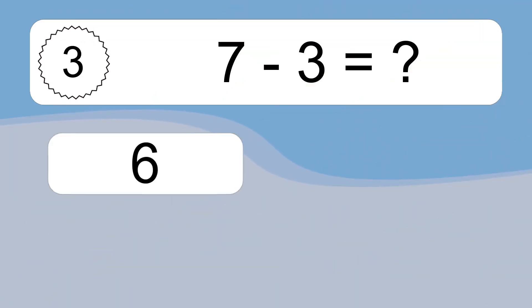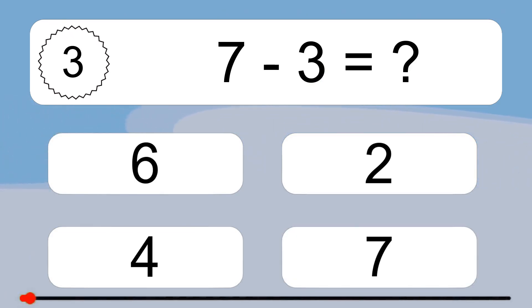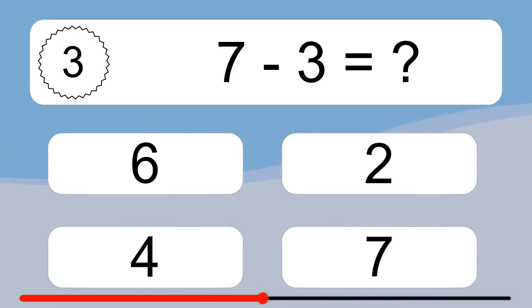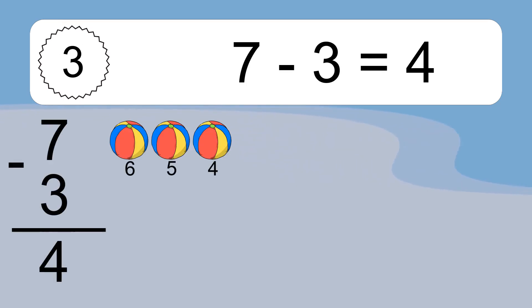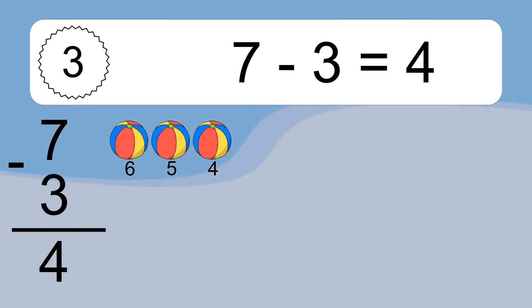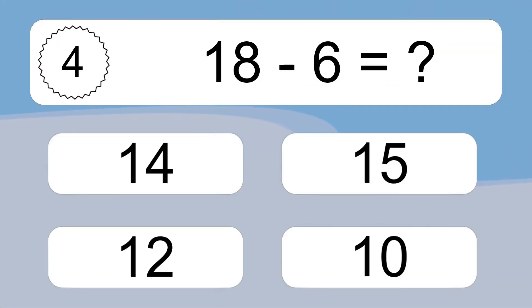7 minus 3 equals what? 7 minus 3 equals 4. Let's count it: 6, 5, 4.